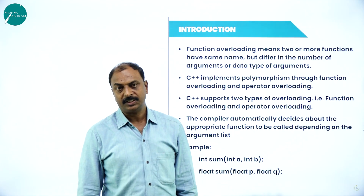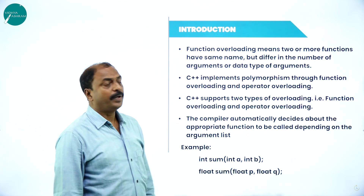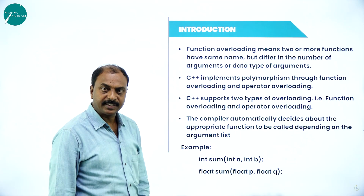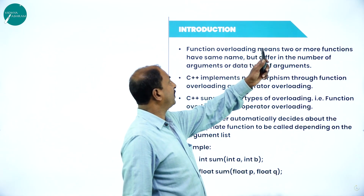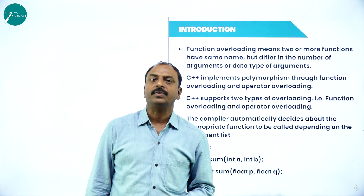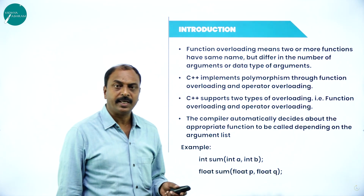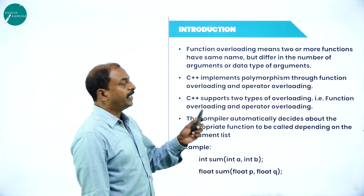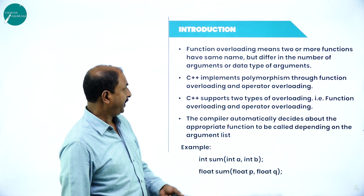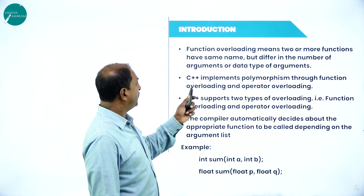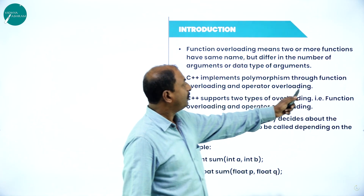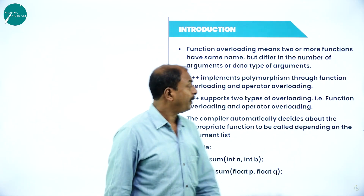Each function may or may not have arguments or parameters. In function overloading, there can be more than two functions with the same name, but each function differs in its parameter list or argument list. C++ implements polymorphism through function overloading and operator overloading.